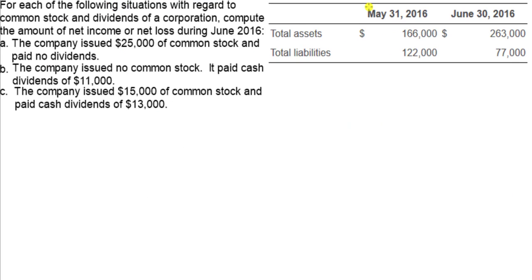Now we have a company with total assets and total liabilities on May 31, 2016, and then total assets and total liabilities on June 30, 2016. The question asks us to compute the amount of net income or net loss during June 2016 for each of three situations regarding common stock and dividends of a corporation.